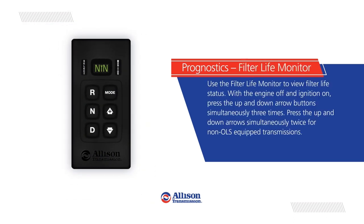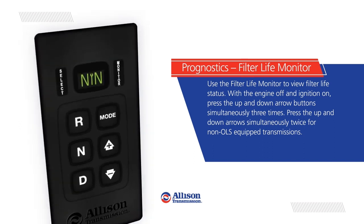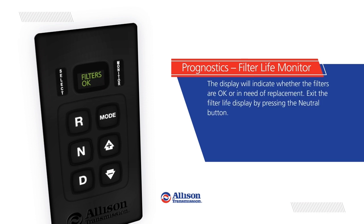Filter Life Monitor: Use the Filter Life Monitor to view filter life status. With the engine off and ignition on, press the up and down arrow button simultaneously three times — or twice for non-OLS equipped transmissions. The display will indicate whether the filters are okay or in need of replacement. Exit the filter life display by pressing the neutral button.